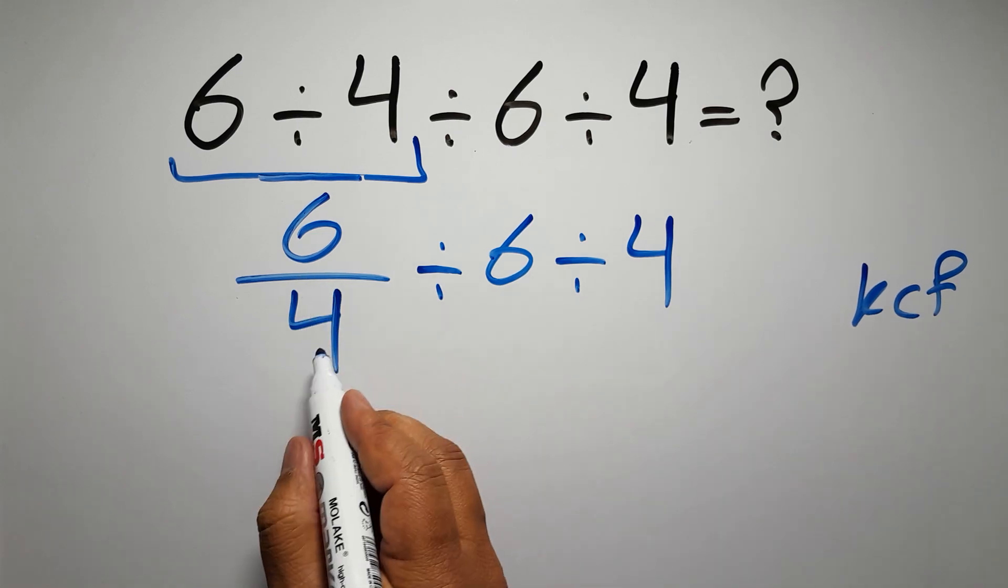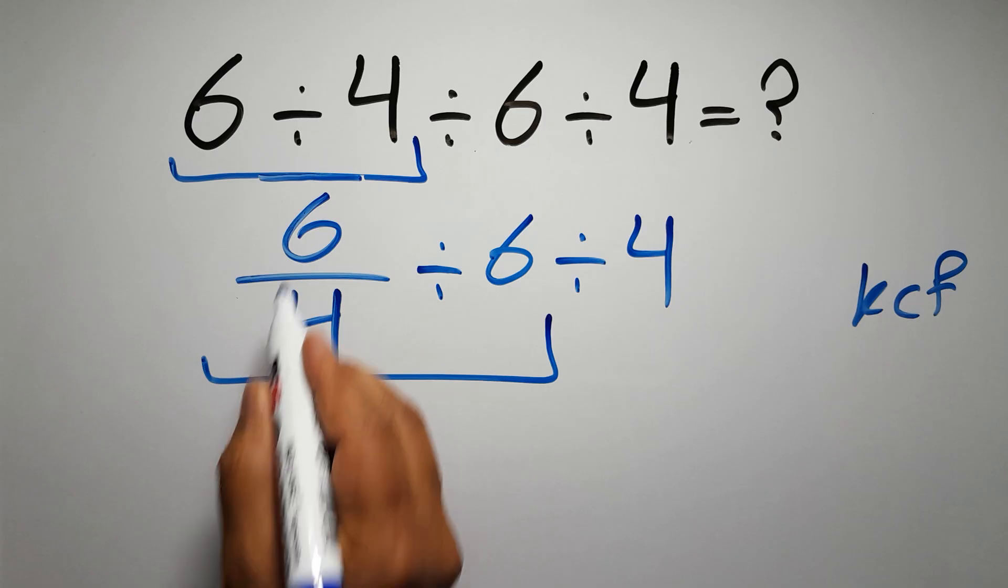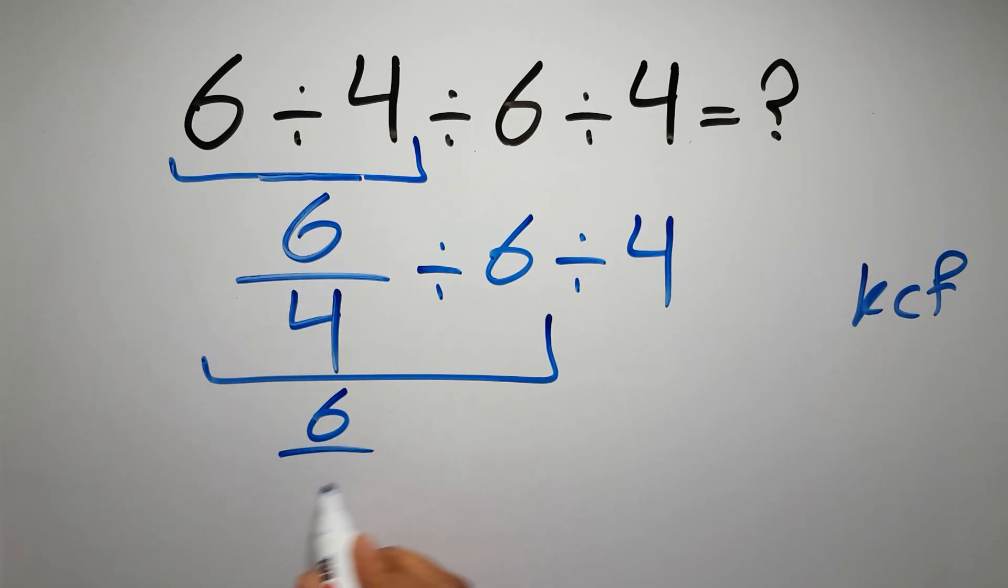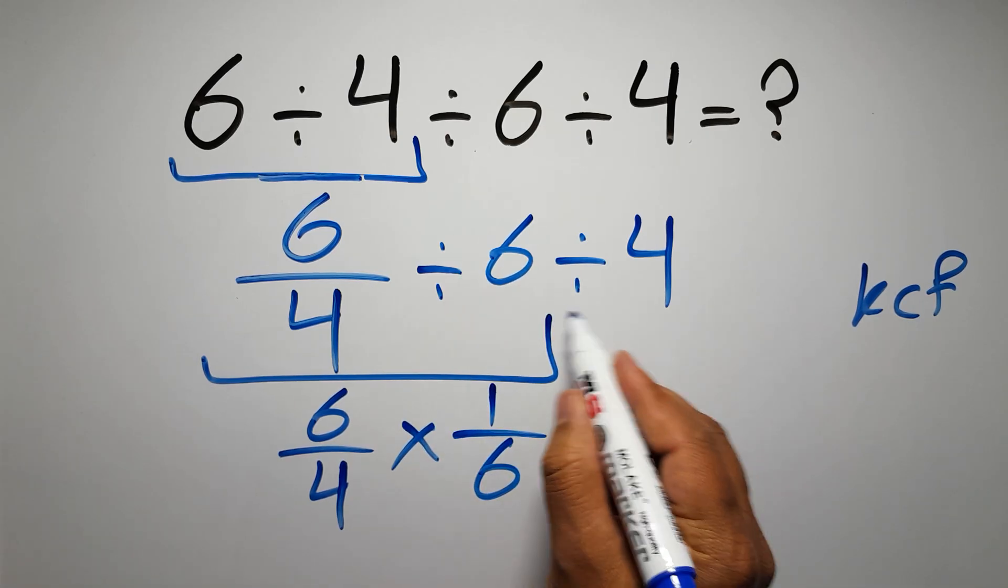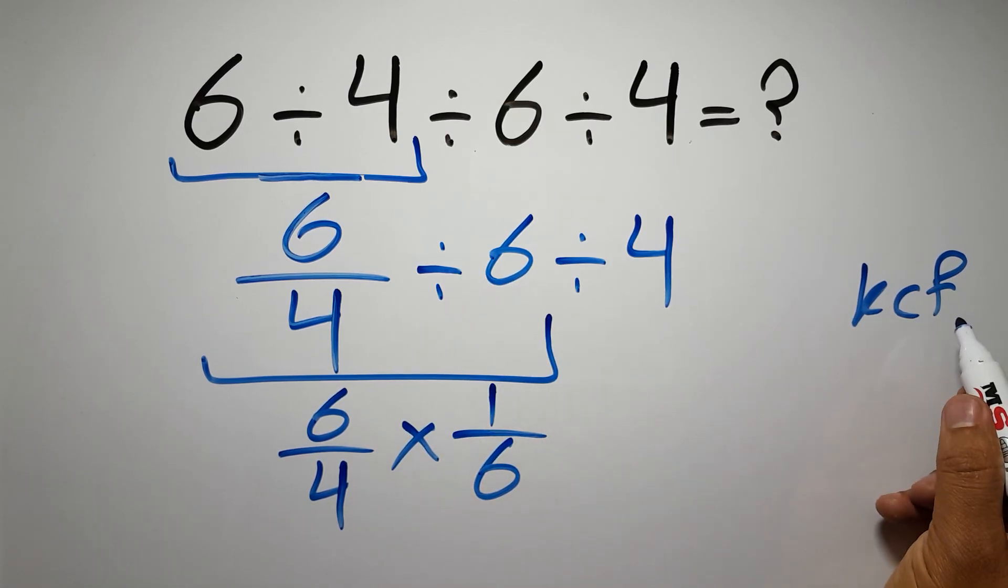We can write: keep the first fraction, 6 over 4, change division to multiplication, and flip the second fraction. And again here we can apply the KCF rule.